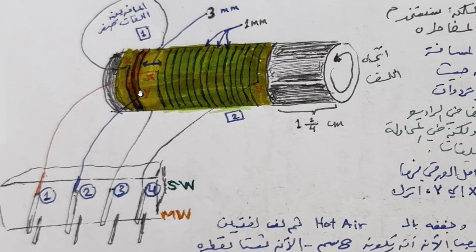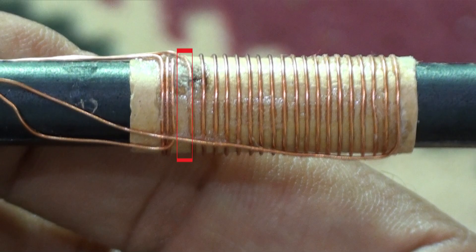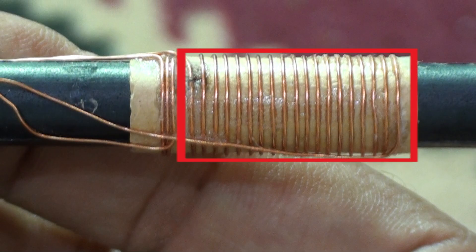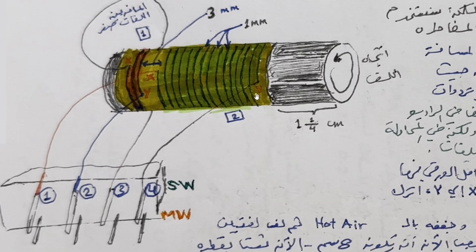The end of the first coil you color with blue. Now the distance from the first coil to the second coil is three millimeters, so you leave three millimeters and then start the second coil. The second coil should be colored with orange at the start, and you do 15 turns with one millimeter of space between each turn.